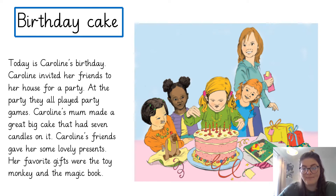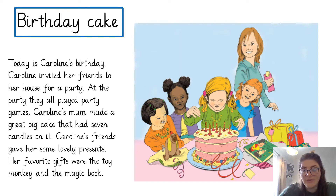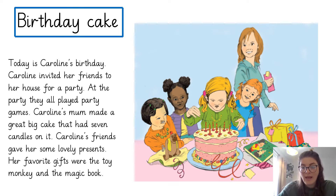I'm going to read that one more time. Today is Caroline's birthday. Caroline invited her friend to her house for a party. At the party they all played party games. Caroline's mum made a great big cake that had seven candles on it. Caroline's friends gave her some lovely presents. Her favourite gifts were the toy monkeys and the magic books. Take a moment to have a think about what you know and understand from the picture and the text.